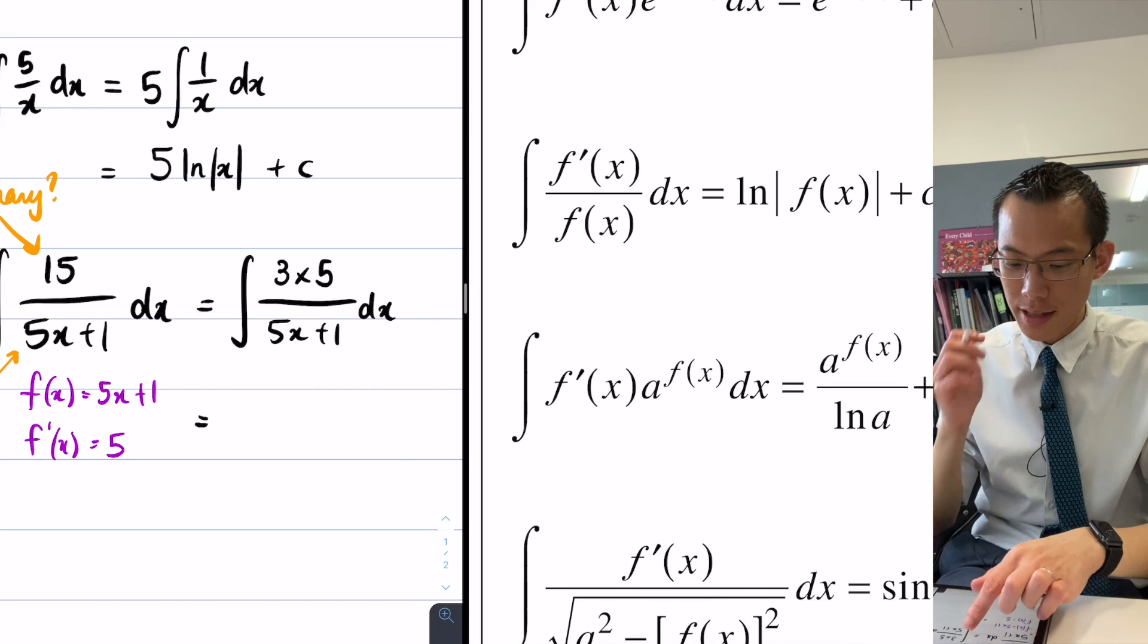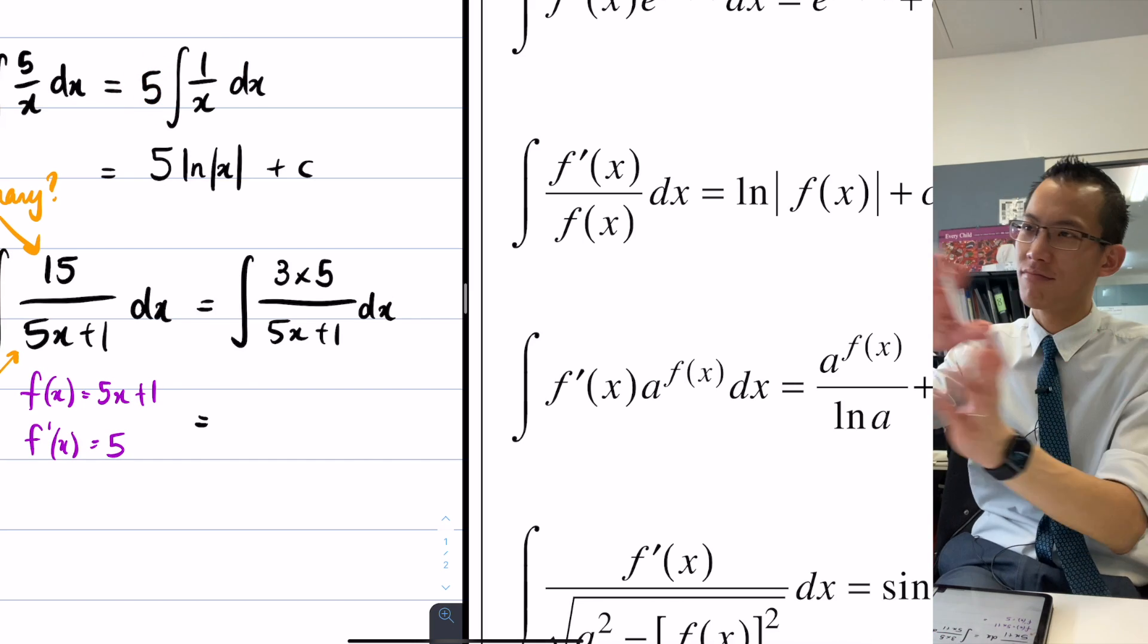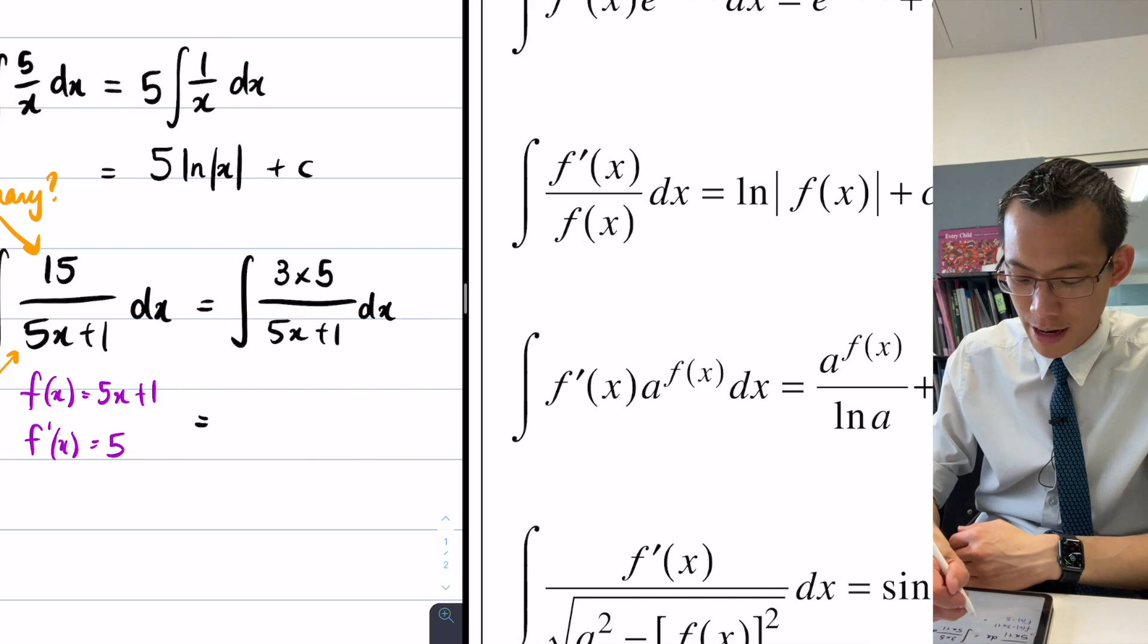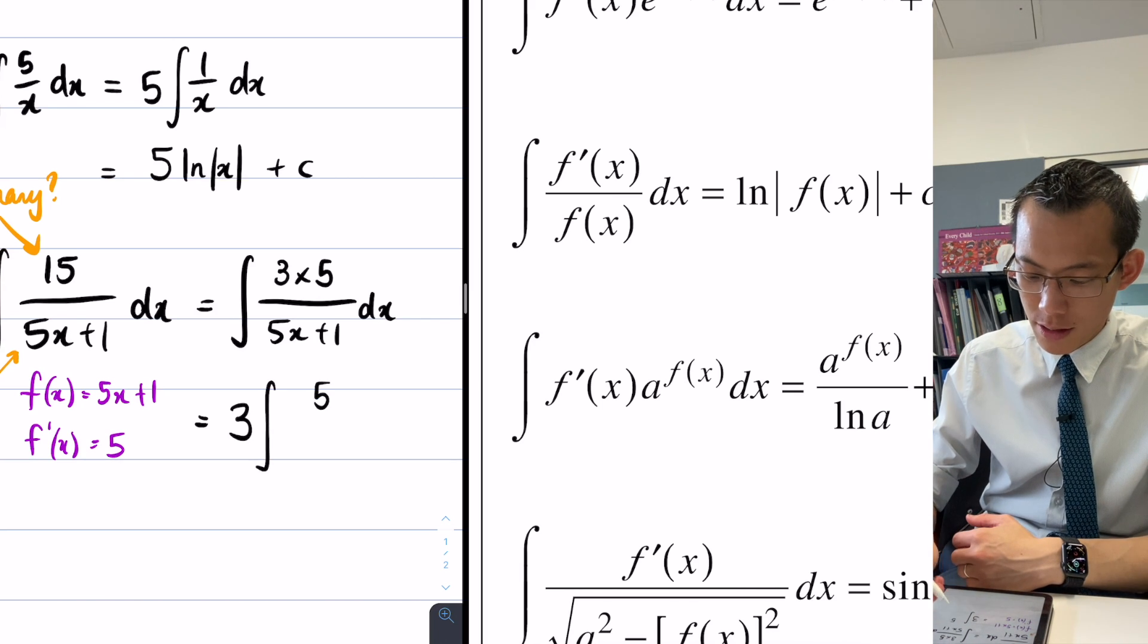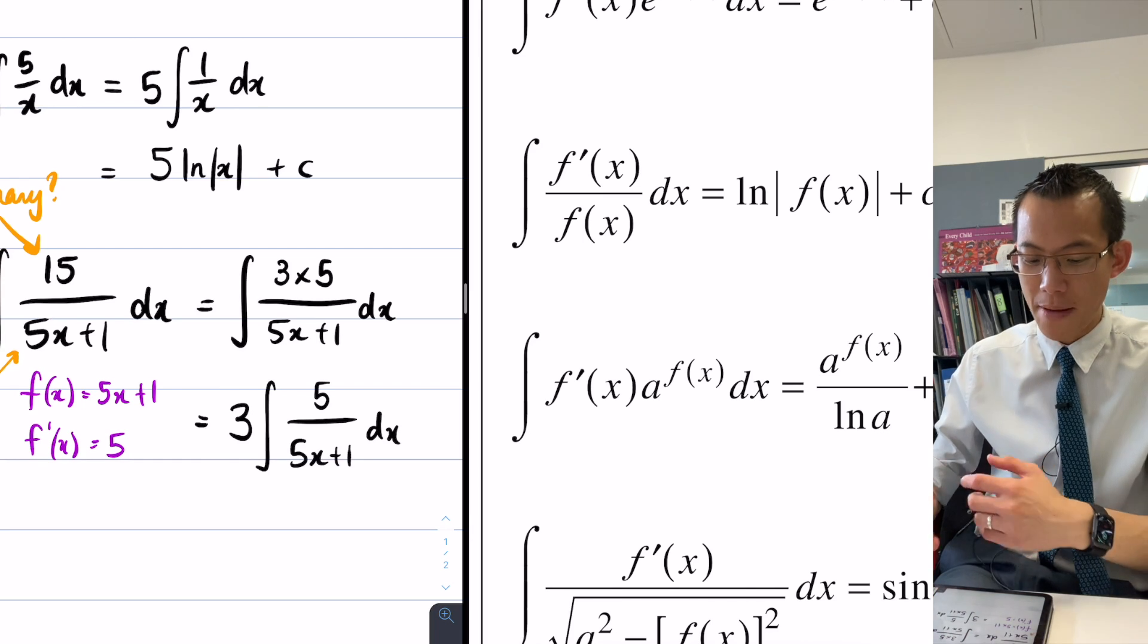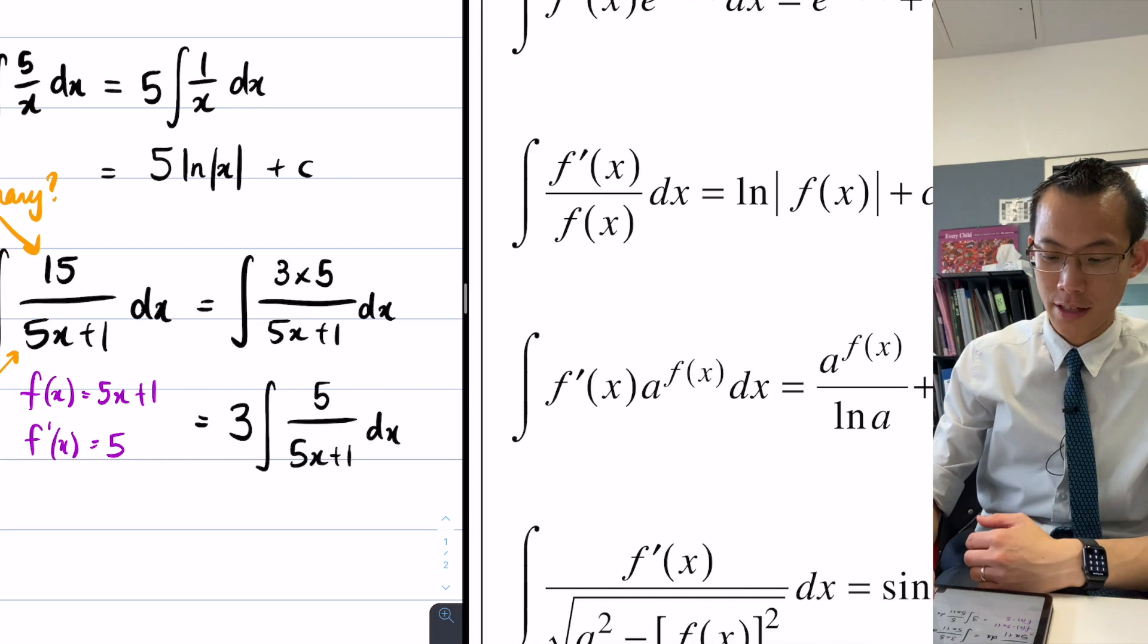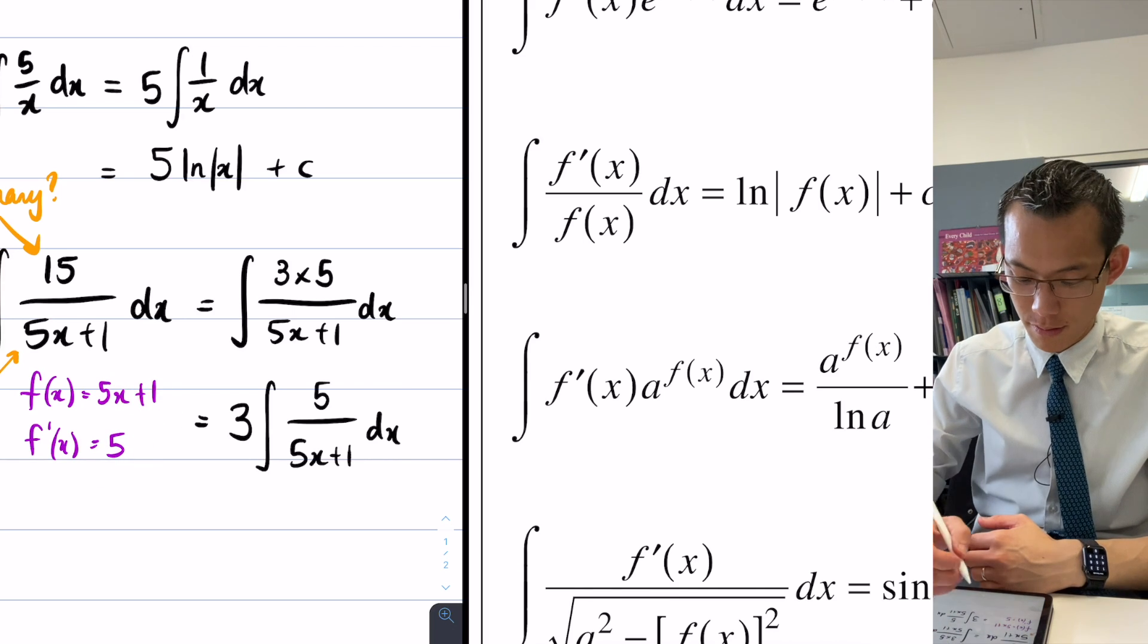So what I'll do is, just like I did on this question up here, I'm like, I'm just going to, I'm just going to take it out. Yeah, I'm just going to factorize out that three. It comes out the front of the integral. What that leaves me with is five on five x plus one. And this is my magical f dash on f. You can even see it over here. Here's five, here's five x plus one.